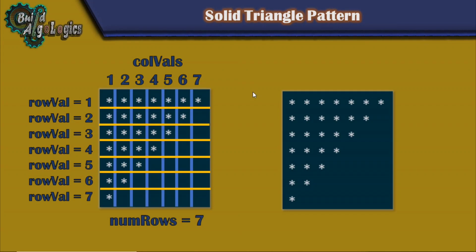Alright, so enough talk, let's begin with this pattern. The blue lines are used for separating each column — column 1, column 2, column 3, and so on — and the yellow lines are used for separating each row. Our outer loop will run 7 times, as the number of rows is 7, and the value of row will vary from 1 to 7 in this case.